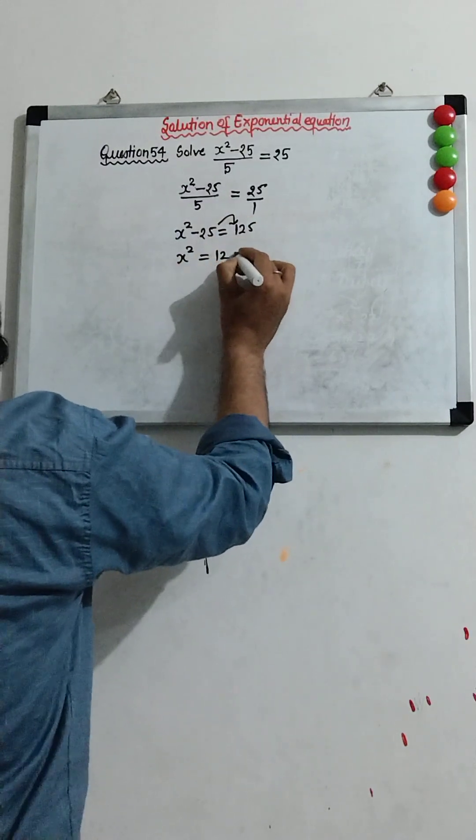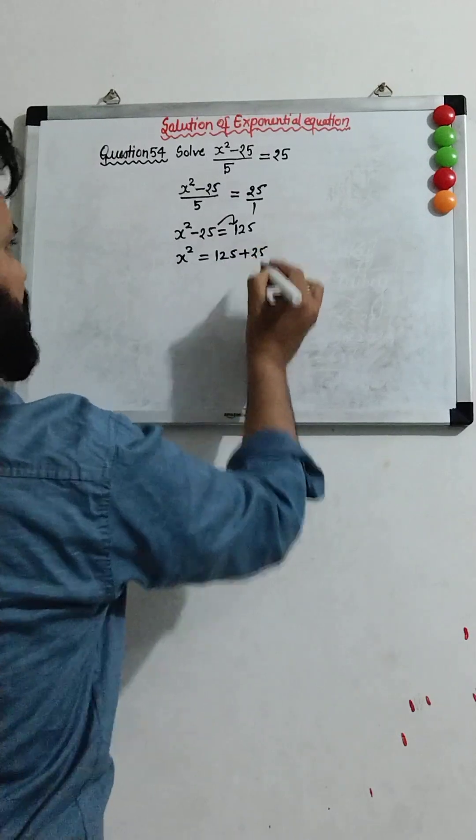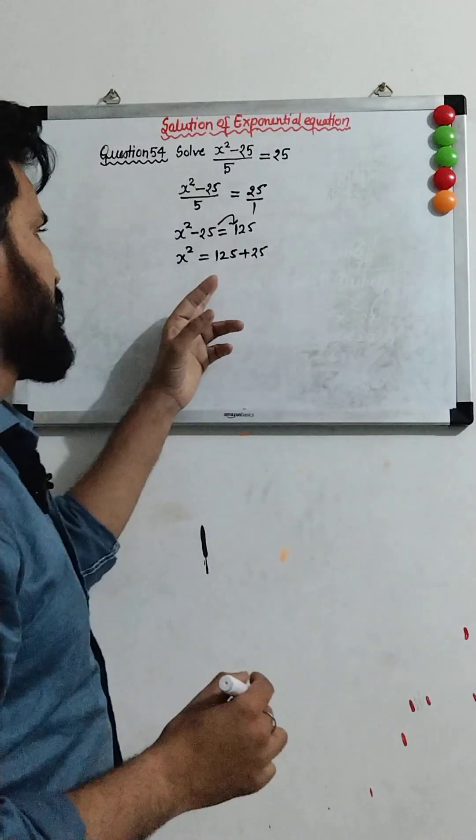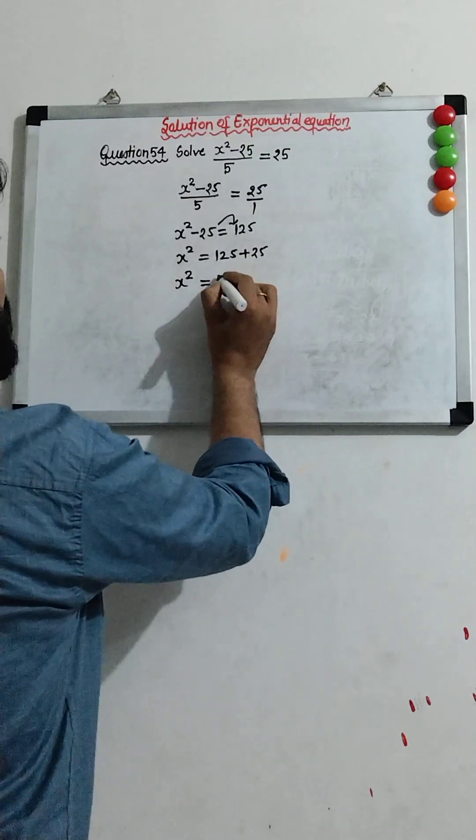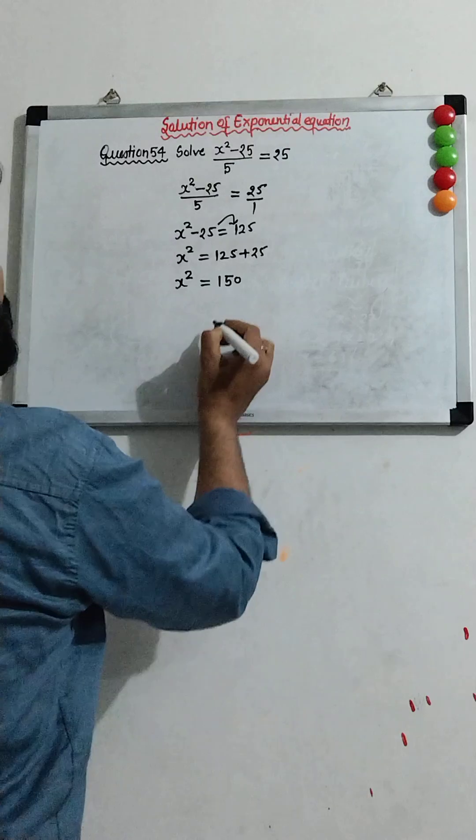will be equal to 125 plus 25. How much is 125 plus 25? We get 150.